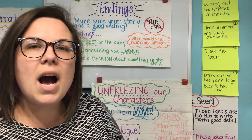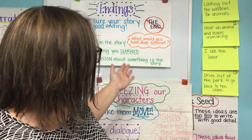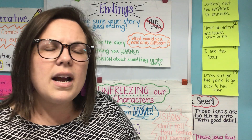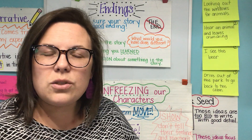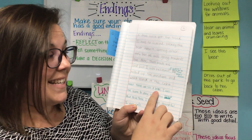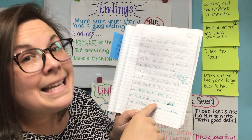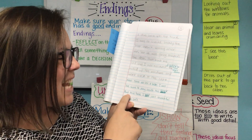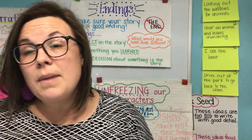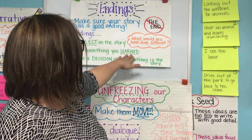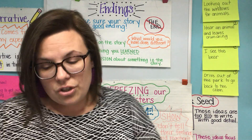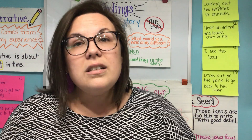But then I thought about what our author Jane Yolen did, and what I told you a good ending sounds like. I really reflected — I thought back to how I felt, or something I could have learned from that story, or what I would have done differently. So I added: 'Next time we see a bear, I will be sure to stay inside the truck. But this time, I was just thankful I was safe.' And that's how I ended my story. I thought back, told something I learned, something I would do differently, and used those details to add a sentence or two to the ending.